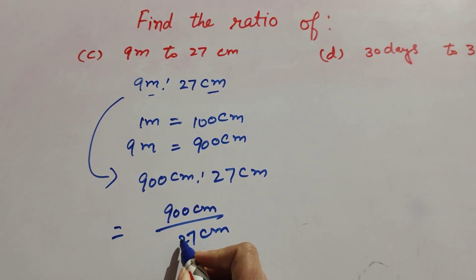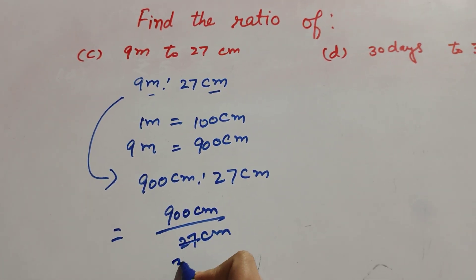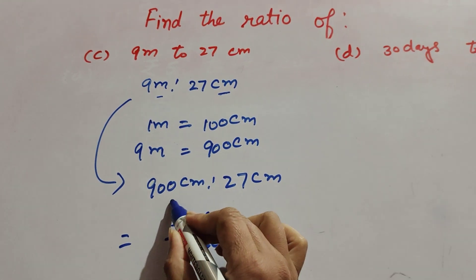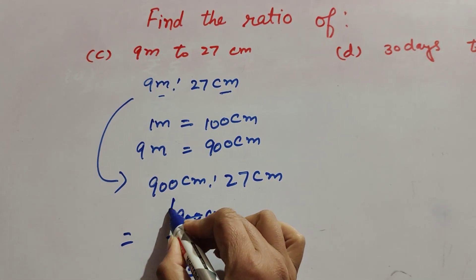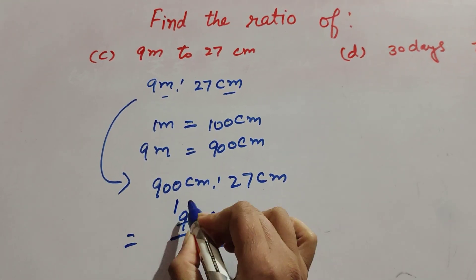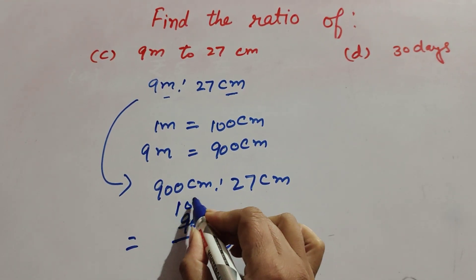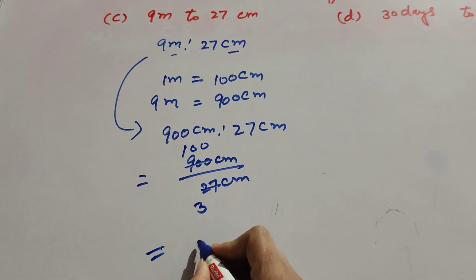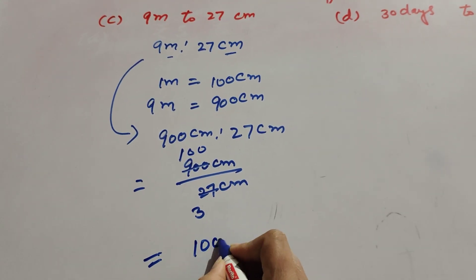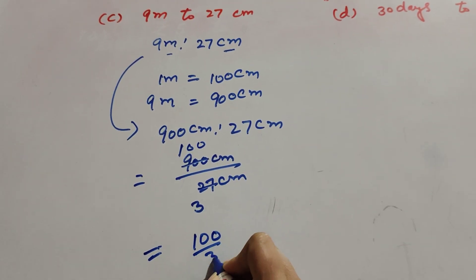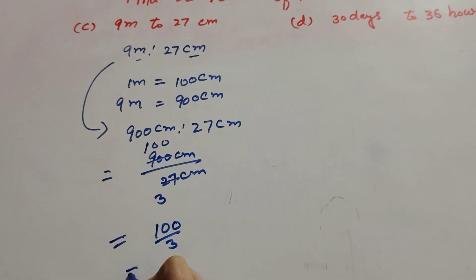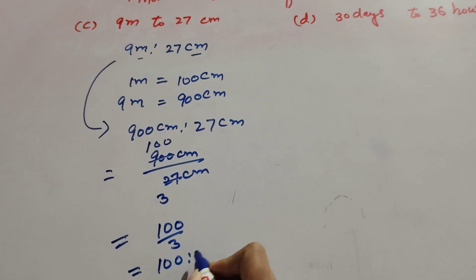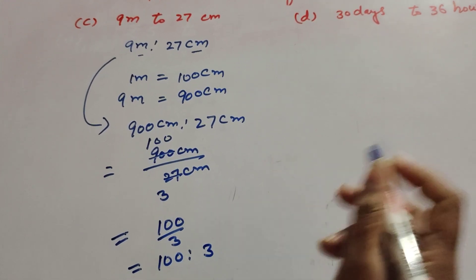We cut them — 9 threes are 27 and 100 nines are 900 — so it is equal to 100 over 3, and its ratio is 100 ratio 3.